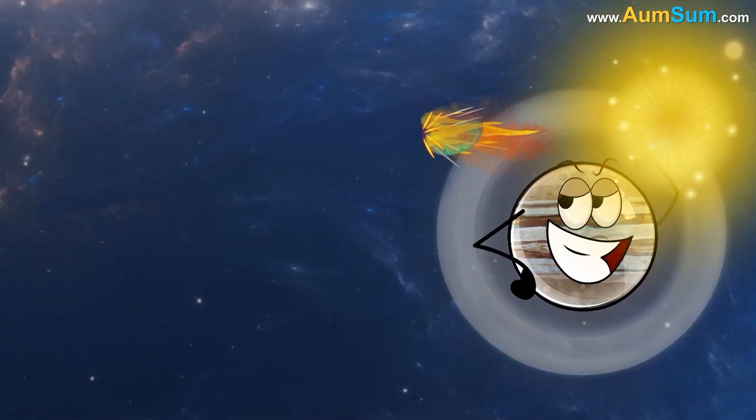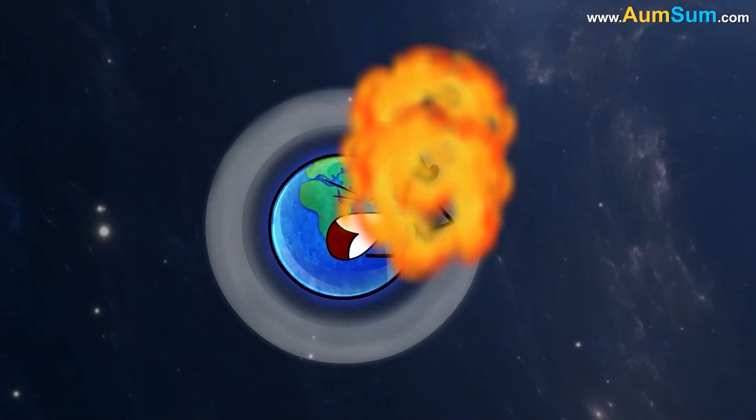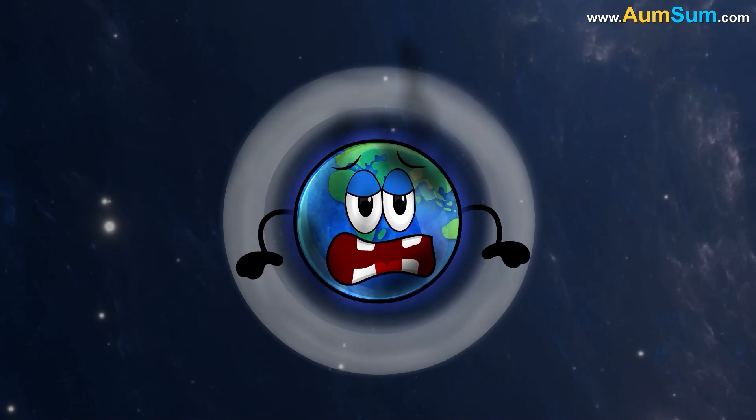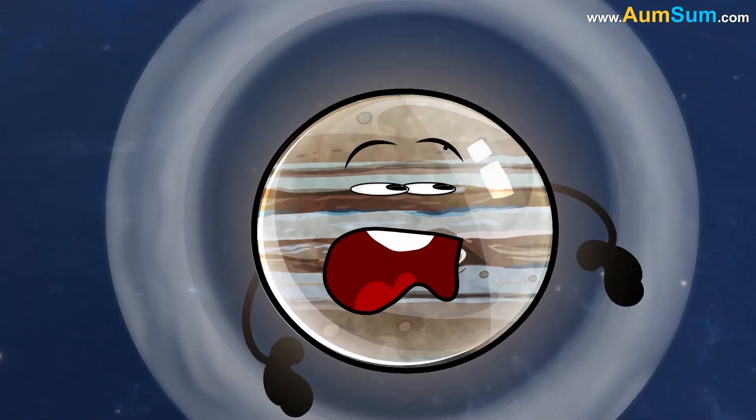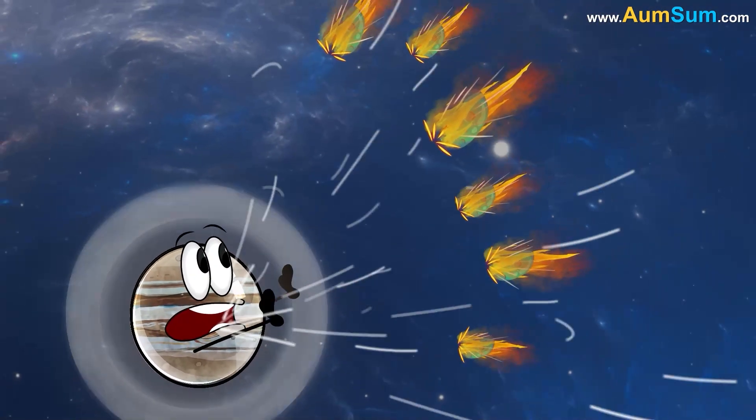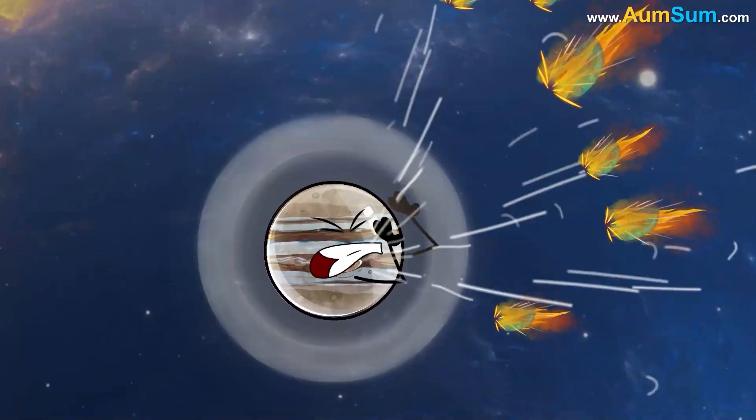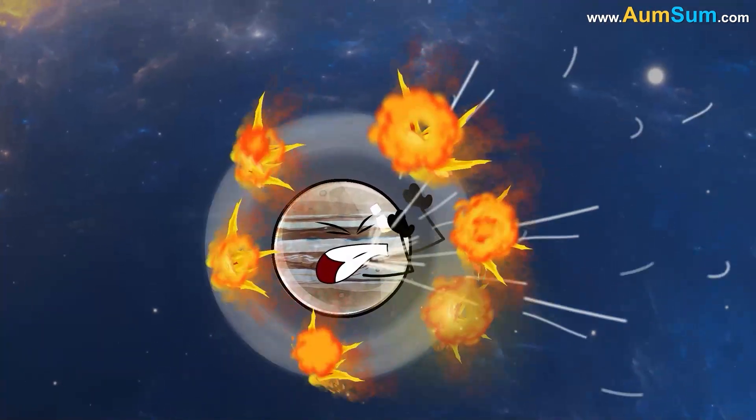Basically, the effect is similar to when a large meteor enters and burns up in Earth's atmosphere. This happens quite often on Jupiter as its strong gravitational pull attracts a lot of debris from space. Hence, Jupiter appears to be flashing.